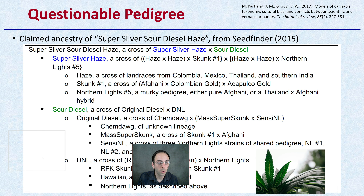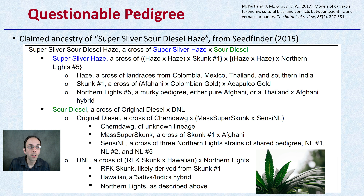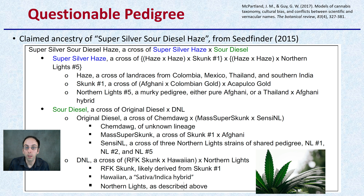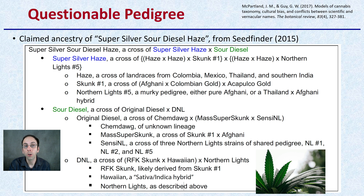Last, we're looking at some questionable pedigree — the claimed ancestry of Super Sour Diesel Haze from Seed Finder. What gives it its questionable pedigree is when you see words like 'murky pedigree' or 'it's either this or it could be that' — that should throw up a red flag that some things may not quite be right. We also see terms like 'likely derived from.' Just because we have this end product, where it actually came from is not really well defined. And a lot of that goes back to the poor naming system currently in place.